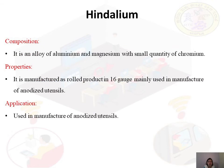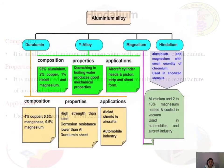Hindelium is also an aluminium alloy made up of aluminium, magnesium, and small quantities of chromium. It is used in the manufacturing of anodized utensils — you may have seen aluminium utensils in the kitchen; those are made of Hindelium.